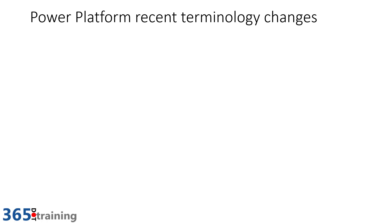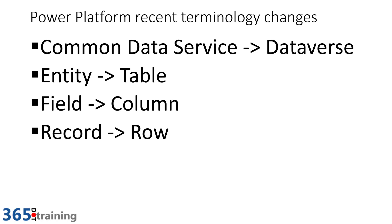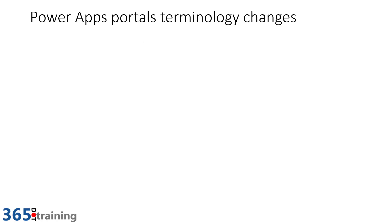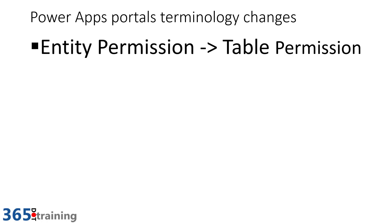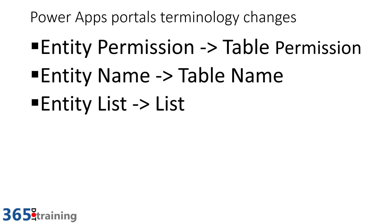Recently there have been some terminology changes stemming from the Power Platform changes a few months back. Common Data Service is now Dataverse, an entity is now called a table, a field is called a column, a record is called a row, and there are a few other changes as well. In Power Apps portals, entity permissions are now table permissions, entity name is now table name, and an entity list is now just called a list.